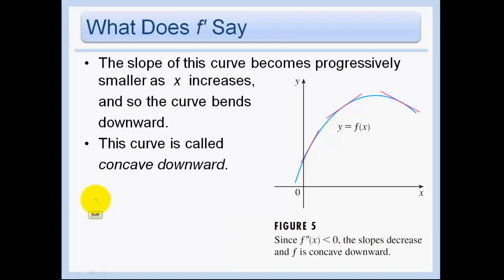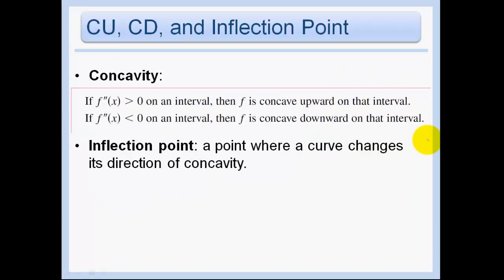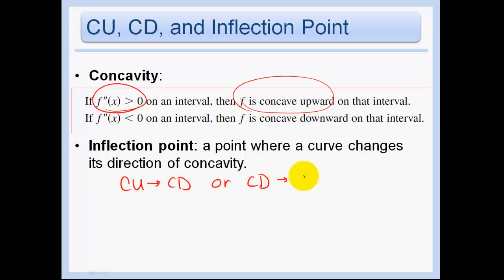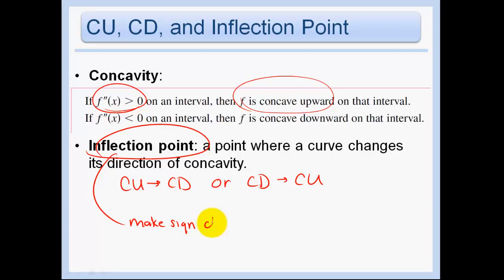The same thing for concave downward: f prime prime negative means that f prime is decreasing, which means the function is concave downward — the rates of change are getting more and more negative. In summary: f prime prime greater than 0 means f is concave upward. An inflection point is anywhere a curve changes its direction of concavity — concave up to concave down, or concave down to concave up. The easiest way to check for an inflection point is to make a sign chart of f prime prime and look for where it changes from positive to negative or negative to positive.